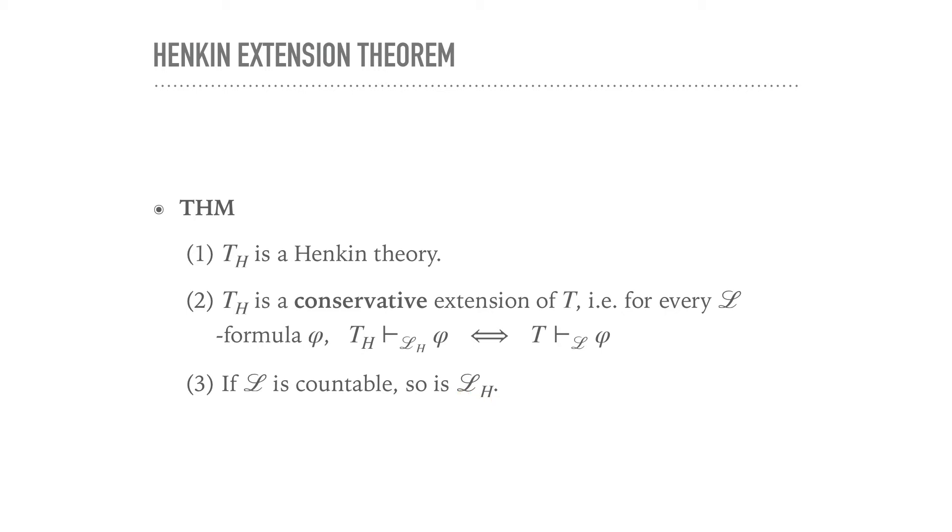The most important property, besides this being Henkin, is then another property, property 2 here, namely, this T_h should not be more powerful than our original T in terms of what it can prove. In particular, it should not be inconsistent. So if T is consistent, then T_h should also be consistent. And one can actually show that in terms of provability, T_h is not more powerful at all. It is what is called a conservative extension of T.